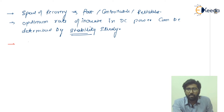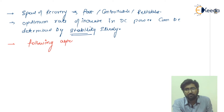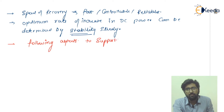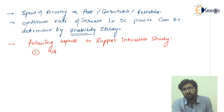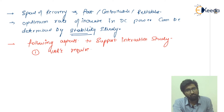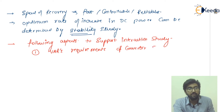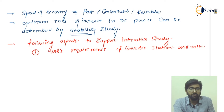Now, there are the following aspects which support the interaction study for specification and design. The first point is related to VAR requirements of the converter stations and voltage study.